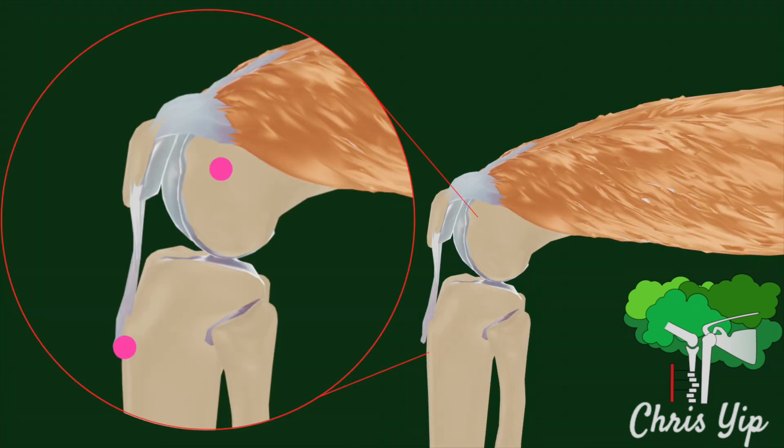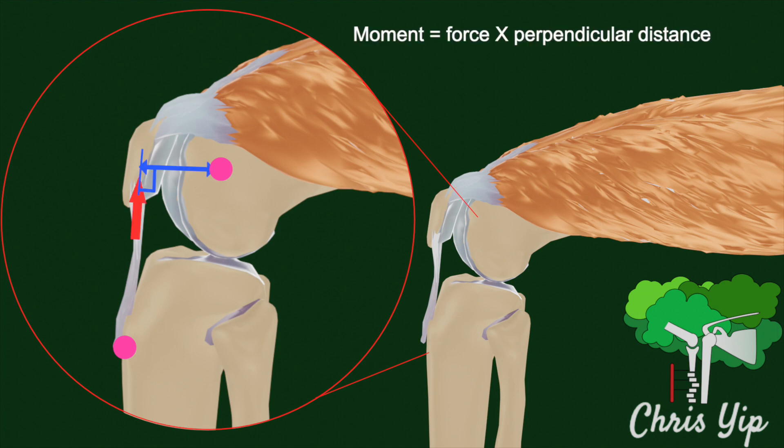When the patella is present, the elevation of the tendon away from the knee changes the orientation of the force exerted onto the tibia. This increases the perpendicular distance between the line of action of the force and the centre of rotation, lowering the amount of force necessary to rotate the tibia.